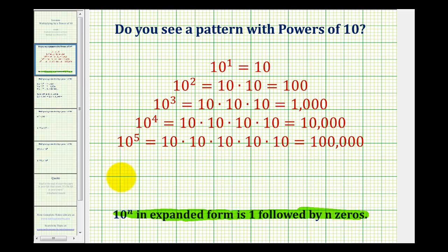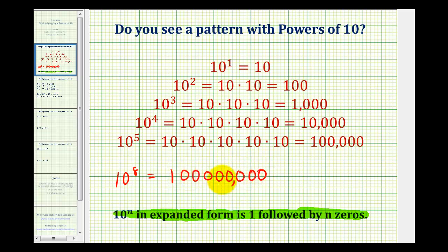So if we had 10 to the eighth, this would be one followed by eight zeros, which would be 100,000,000.